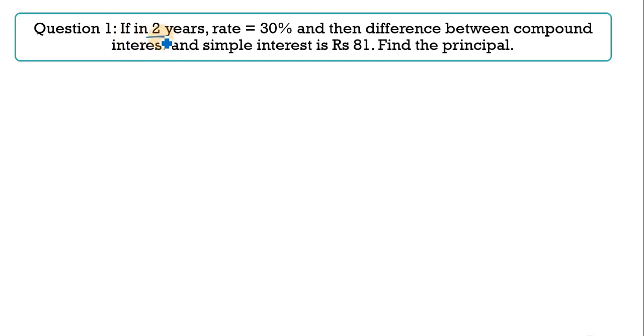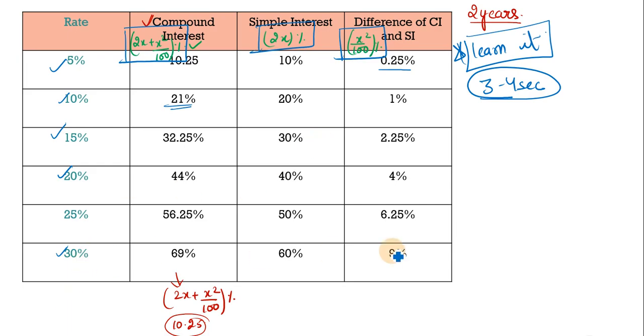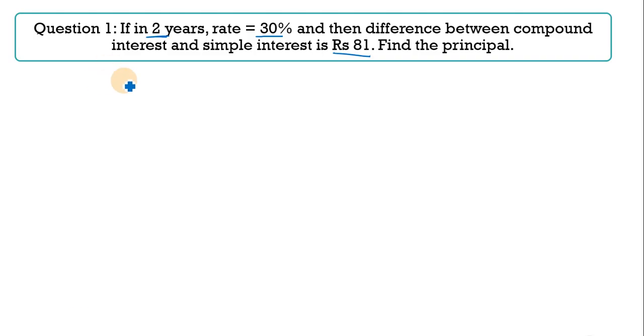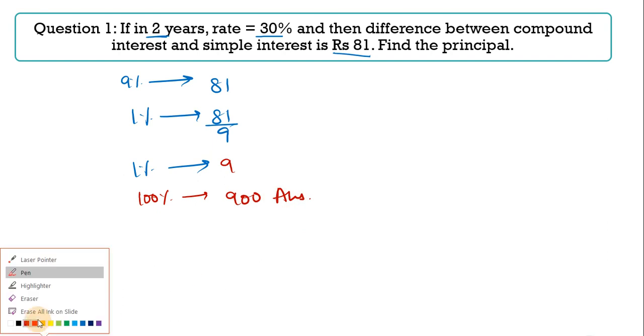Now let's move further. If in 2 years, rate is equal to 30%, and the difference between compound interest and simple interest is Rs 81, find the principle. We have been given the difference. The difference between compound interest and simple interest is 81. So when we have 30 years... see, I changed the sheet. At 30%, our difference was 9%. So it directly comes from here. 9% equals 81.